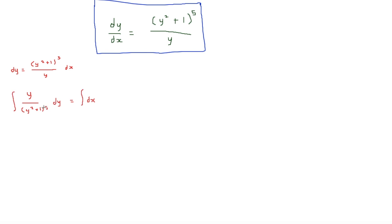The left hand side is a lot more difficult to integrate so we're going to integrate by substitution. We're going to let u equal y squared plus 1. That means du over dy is equal to 2y, so therefore dy is equal to du over 2y.